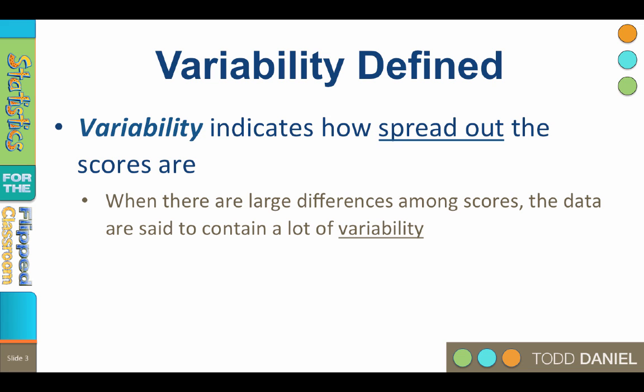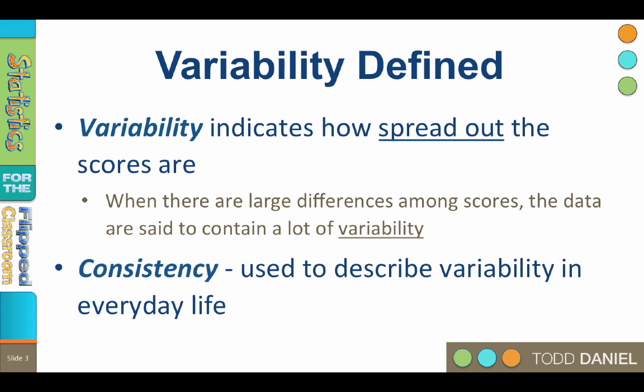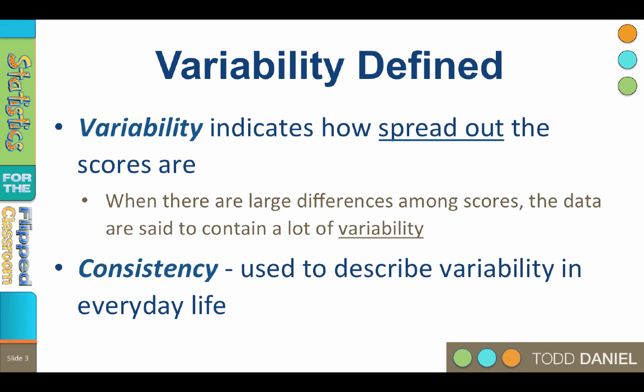Variability indicates how spread out the scores are, how much the scores differ from each other. When there are large differences among the scores, the data are said to contain a lot of variability. The opposite of variability is consistency. Consistency is the term that we use to describe variability in everyday life.